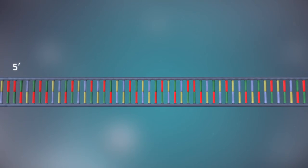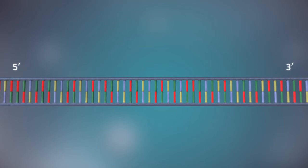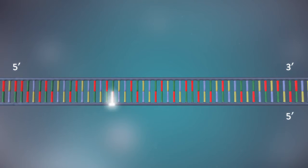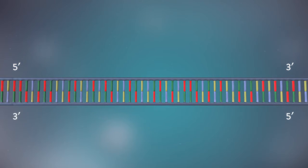Each strand has a 5' end and a 3' end. The two strands run in opposite directions. This determines how each strand of DNA is replicated.